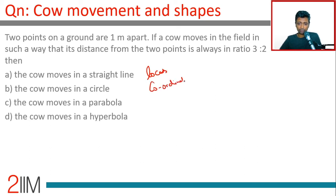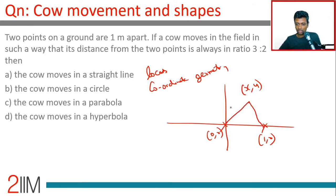Plug in coordinates. They're one meter apart. Keep origin as one of the two, keep 1 comma 0 so that the one meter apart idea comes in. There is a point x comma y. This distance to this distance is in the ratio 3 is to 2.